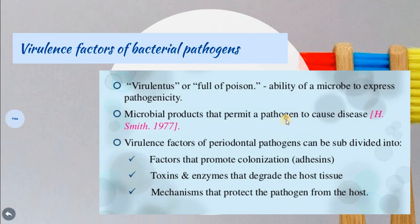Here we are discussing the virulence factor. What is virulence? This word in the dictionary means 'full of poison.' It is the ability of the microbe to express pathogenicity — the possibility of making or generating a disease. It is also defined as a microbial product that permits a pathogen to cause disease. The virulence factors of periodontal pathogens are subdivided into three main categories: those that promote adhesion on the host surface, those that secrete toxins and enzymes that degrade host tissue, and those that find mechanisms to protect the pathogen from the host.